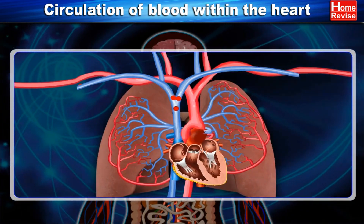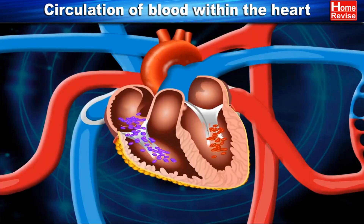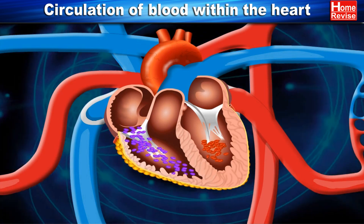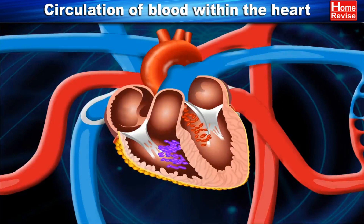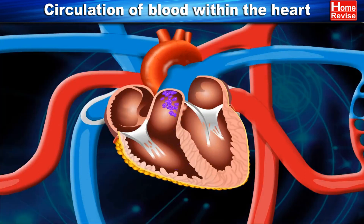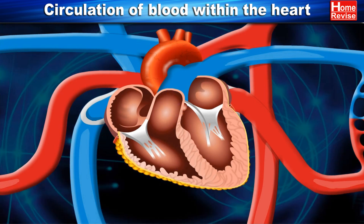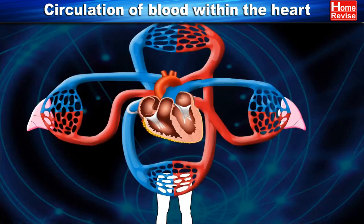Note that the atria are thin-walled whereas the ventricles are thick-walled, as they need to pump blood upwards. Now let's move on to the actual circulation of blood through the heart.